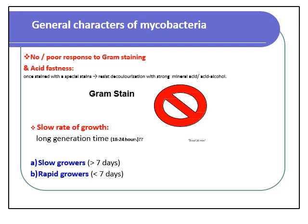The second character is the slow rate of growth, with a long generation time ranging from 18 to 24 hours. They are subdivided into slow growers, where the rate of growth is more than seven days, or rapid growers, where the rate of growth is less than seven days.